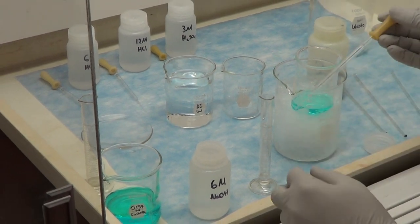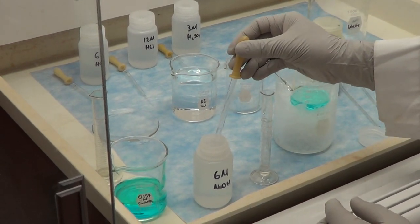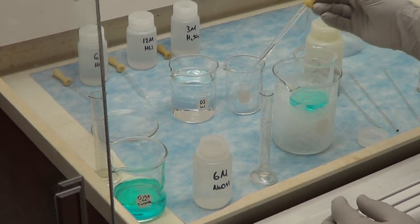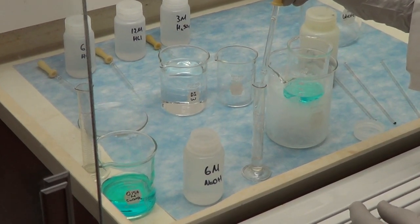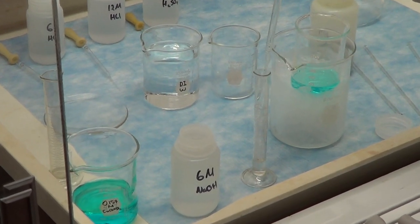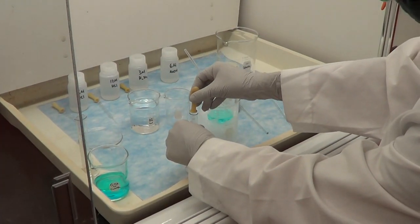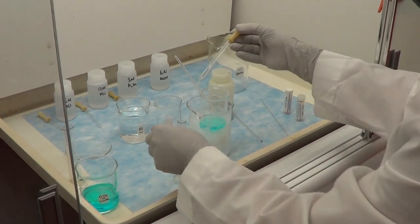We will then measure 2 ml of 6 molar sodium hydroxide solution using a graduated cylinder and add it dropwise with constant stirring to the copper nitrate solution. We will observe the change in color from light green to blue and then dark blue.